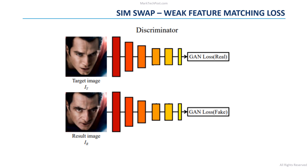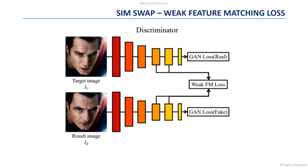There is another problem to tackle. Since we are directly changing the features vector that contains both identity and attribute information of the target image, the attribute information will likely be affected by this process, even though it should remain unchanged. To prevent this, the researchers propose the weak feature matching loss. Since attributes are high-level semantic data, this information is extracted by the last layers of the discriminator. So the weak feature matching loss is applied only to these last few layers, minimizing the difference between the high-level features learned from the target and result images. In this way, the network implicitly learns how to preserve the attributes of the target image in the result image.